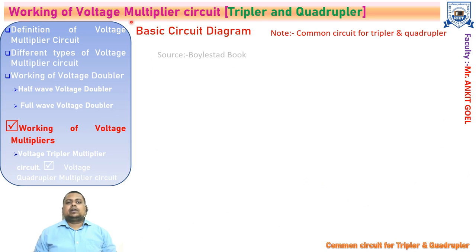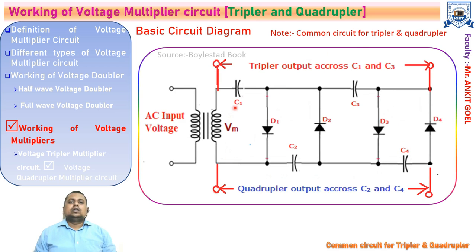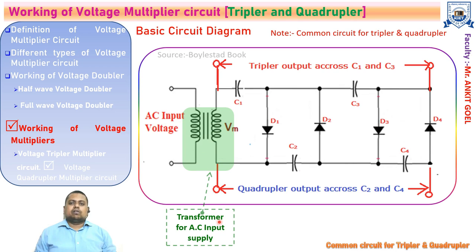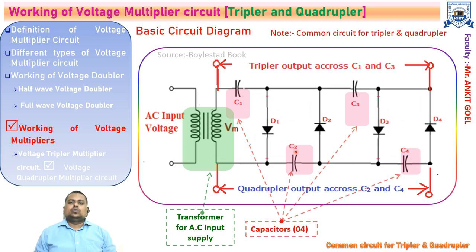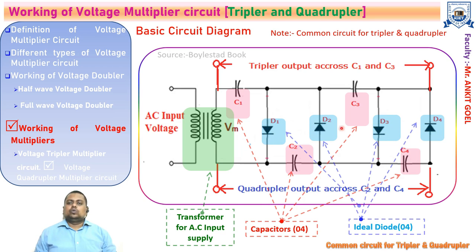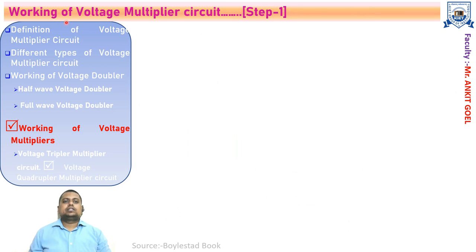Now let us understand the voltage multiplier circuit. There are basically two types: voltage tripler and voltage quadrupler. The circuit for understanding the working of both tripler and quadrupler is common. The basic circuit has an AC input supply through a transformer, four capacitors C1, C2, C3, and C4 with very high time constants, and four ideal diodes D1, D2, D3, and D4 arranged accordingly. If we take the output across capacitors C1 and C3, we get the tripler output; and when we take the output across C2 and C4, we get the quadrupler output.